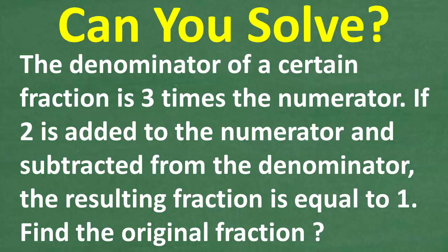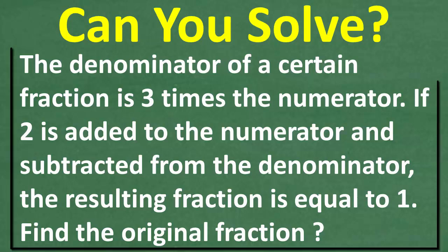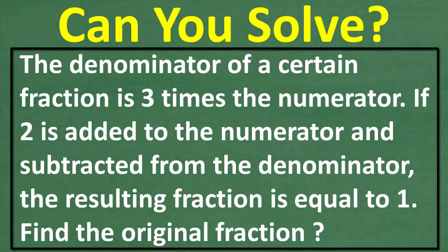Let's see if you have the math skills to solve this interesting little math word problem. The denominator of a certain fraction is three times the numerator. If two is added to the numerator and subtracted from the denominator, the resulting fraction is equal to one. What we want to do here is find the original fraction.